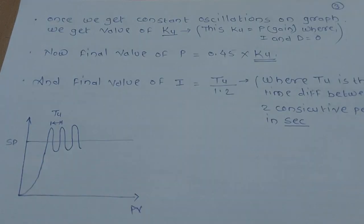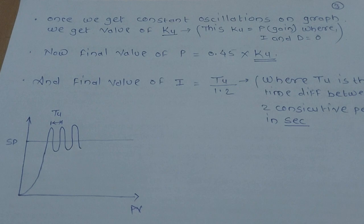Once we get the constant oscillation on the graph, we get the value of Ku. This is the value we gave to P when I and D were zero. So now the final value of proportional, that is gain, will be 0.45 into Ku, and the final value of I is equal to Tu by 1.2.